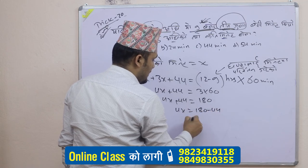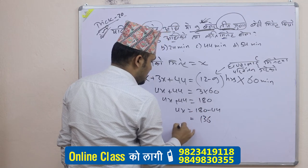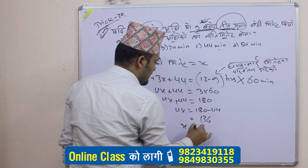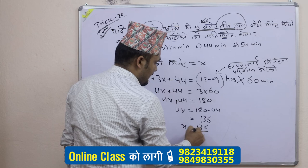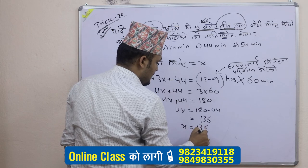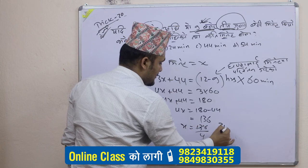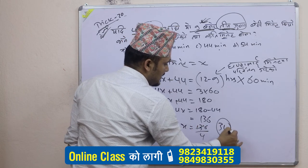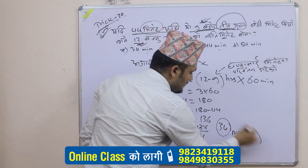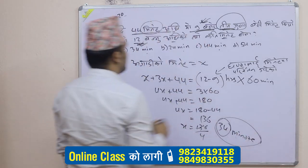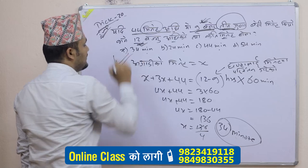Now, this time, what do I do? 3x equals 36. So x equals 9.36 upon 4 — 4, 3 power, 12. So how many minutes? This time 34 minutes? How many minutes? 24 minutes. 34 minutes.